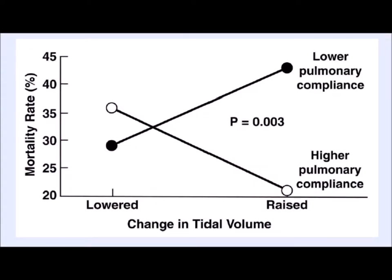They also reanalyzed whether everyone benefits from low tidal volume. Patients with lower pulmonary compliance who receive higher tidal volumes have higher mortality — you over-distend the 'baby lung.' But patients with slightly higher compliance who receive higher tidal volumes actually do better, because they can accommodate those volumes for oxygenation and ventilation. The tidal volume is not as important as the functional lung upon which it's distributed. This led to Amato's 2015 finding that driving pressure is more important than tidal volume.